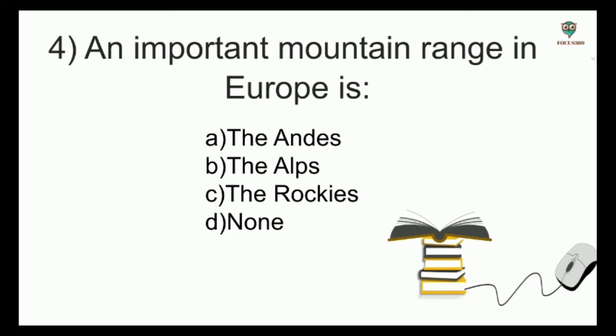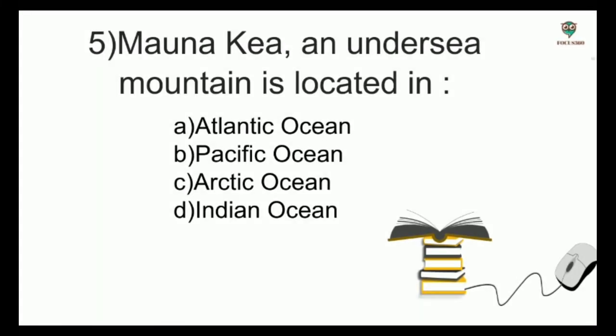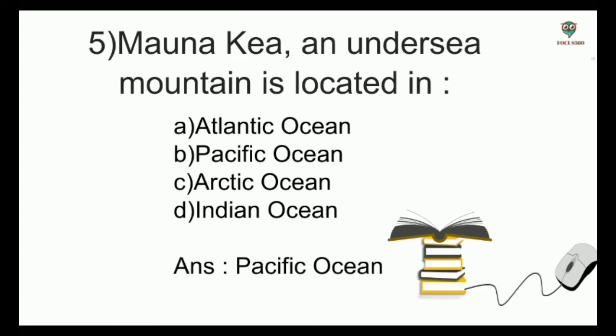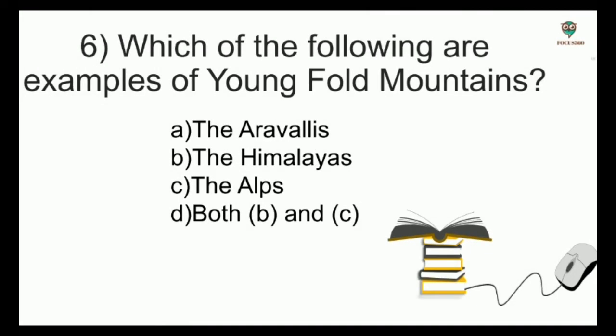An important mountain range in Europe is — options: the Andes, the Alps, the Rockies, none — and the answer is the Alps. Next, Mauna Kea, an undersea mountain, is located in — options: Atlantic Ocean, Pacific Ocean, Arctic Ocean, Indian Ocean — and the answer is Pacific Ocean. Mauna Kea is higher than Mount Everest, being 10,205 meters high.